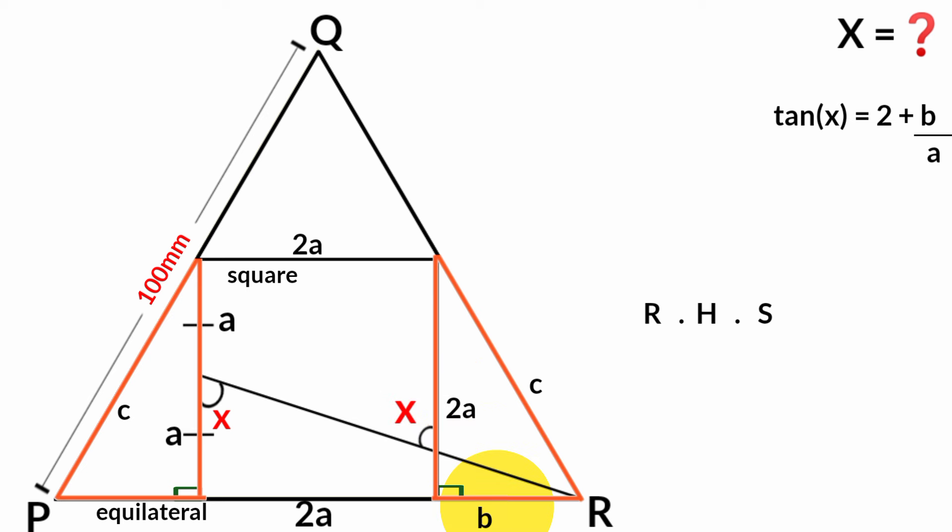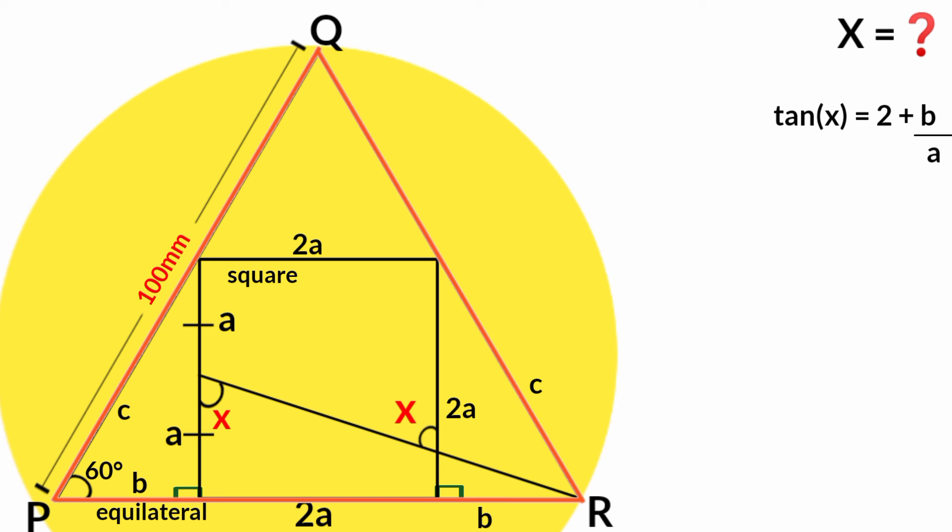The congruent triangles we know have the same length for all three corresponding sides. So since this is b, this must also be b. Now this angle we know is 60 degrees because it is the angle of an equilateral triangle PQR.